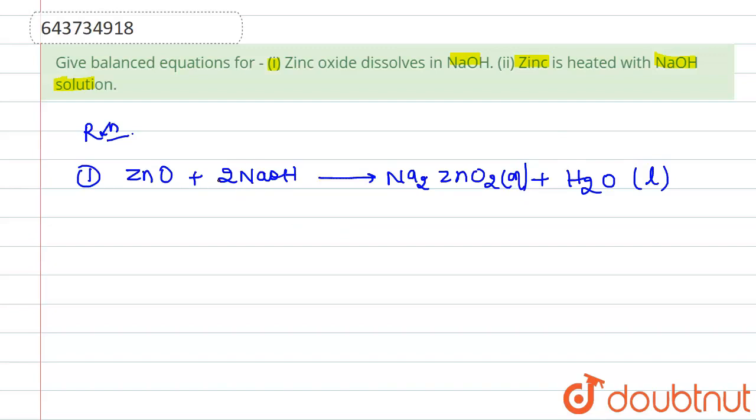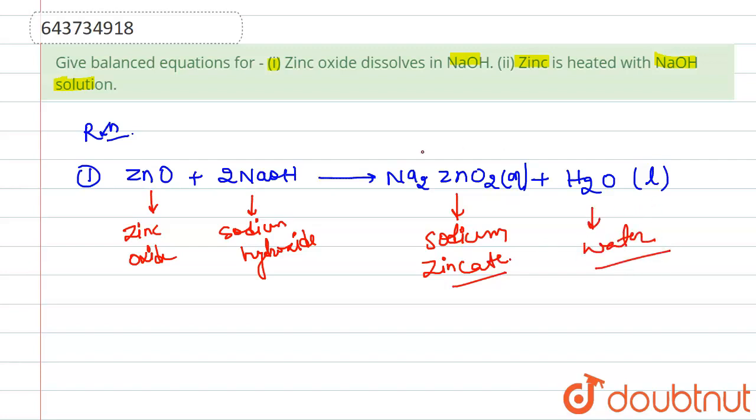Now if we talk about the reaction, what we have observed here is when zinc oxide is added to sodium hydroxide, this is a neutralization reaction that takes place where sodium zincate is a salt that is formed and water is formed too. So this is our reaction which is actually balanced.